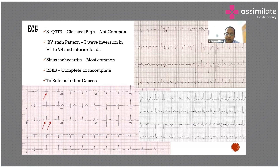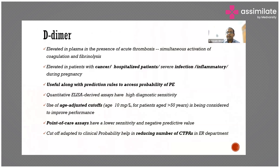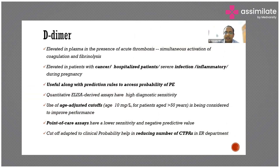D-dimer is very commonly sent — when a patient has high chances of pulmonary embolism, clinicians send D-dimer. However, in hospitalized patients, patients with cancer, severe infection, inflammation, or pregnancy, D-dimer will be elevated because it is a fibrin degradation product. Whenever there is thrombosis and fibrinolysis, D-dimer gets elevated. So D-dimer is not specific or sensitive; it only has a good negative predictive value — a negative D-dimer means 95 percent of the time the patient will not have a major pulmonary embolism.